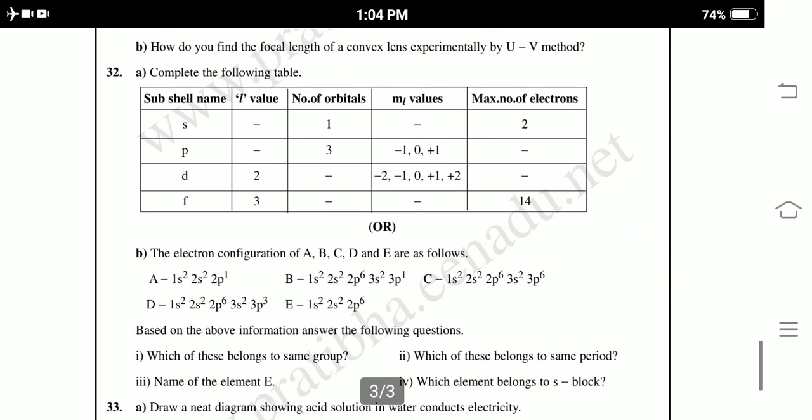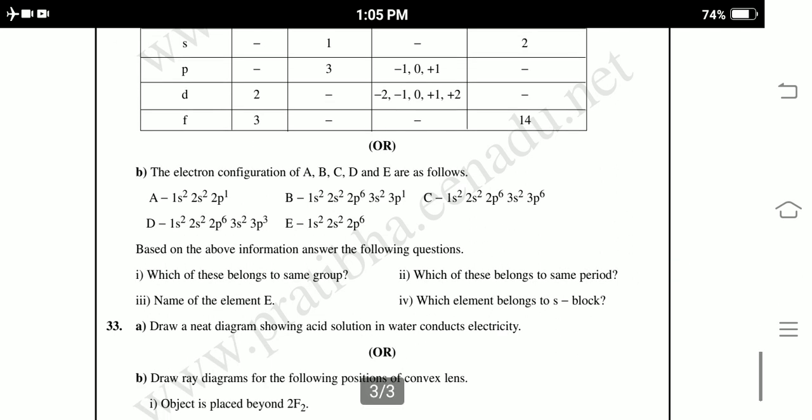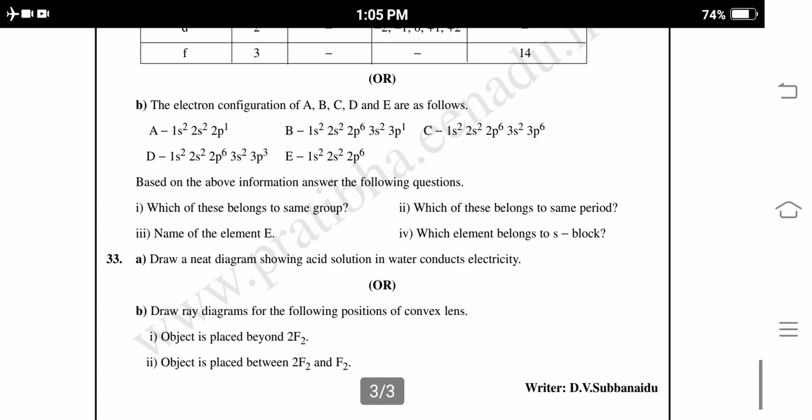Next 32, complete the following table. B, the electron configuration of A, B, C, D and E are as follows. Based on the above information answer the following questions. Next 33, last question. Draw a neat diagram showing acid solution in water conduct electricity. Draw ray diagrams for the following position of convex lens: object is placed behind the 2F2, object is placed between the 2F2 and F2.